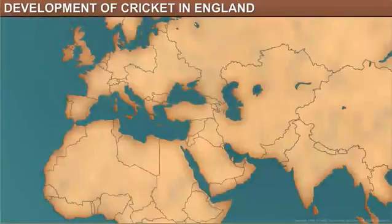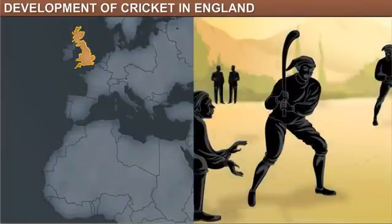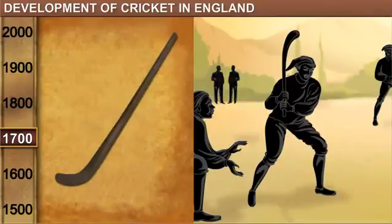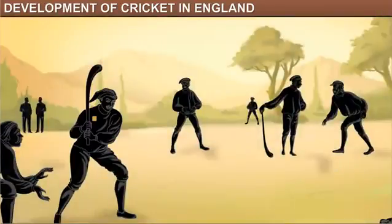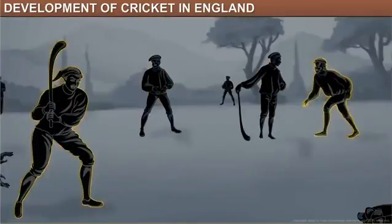Nearly 500 years ago, cricket developed in rural England out of several stick and ball games. Till the 18th century, cricket bats were curved like hockey sticks. Such bats helped in making contact with the ball that was bowled underarm at that time.